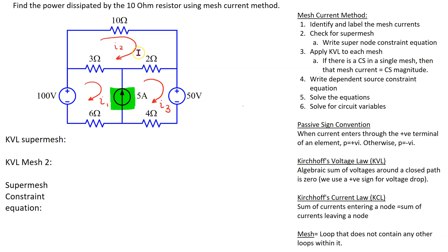We have assumed a clockwise direction for all these meshes. The next step is to check for the possibility of a super mesh. Voltage sources, whether independent or dependent, do not cause any issue with the mesh current method and do not give rise to a super mesh. However, a current source can give rise to a super mesh, and this depends upon the location of the current source. If a current source is located at the boundary between two meshes, then this gives rise to a super mesh.